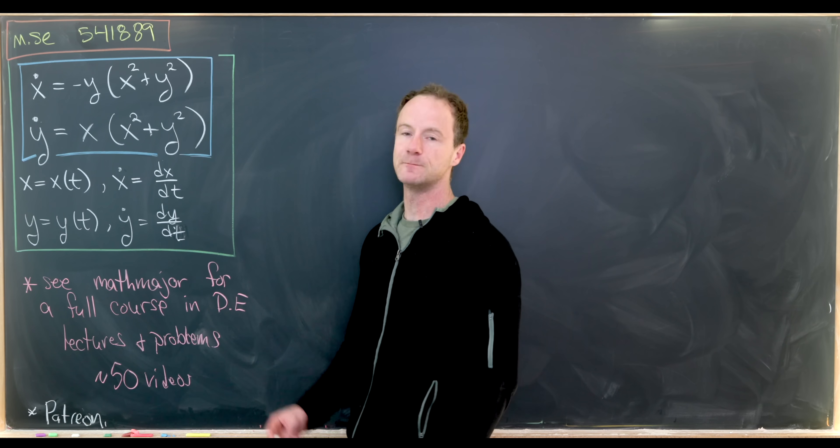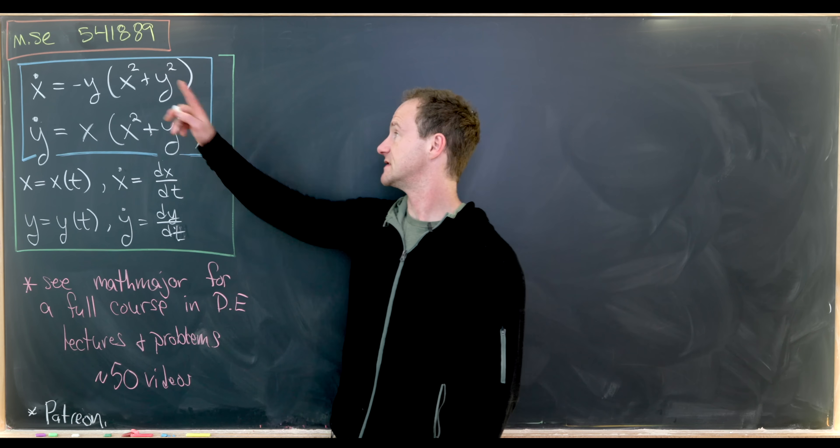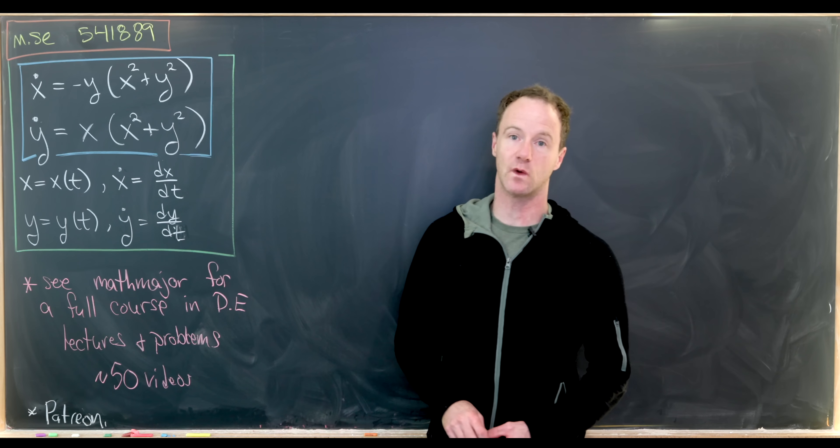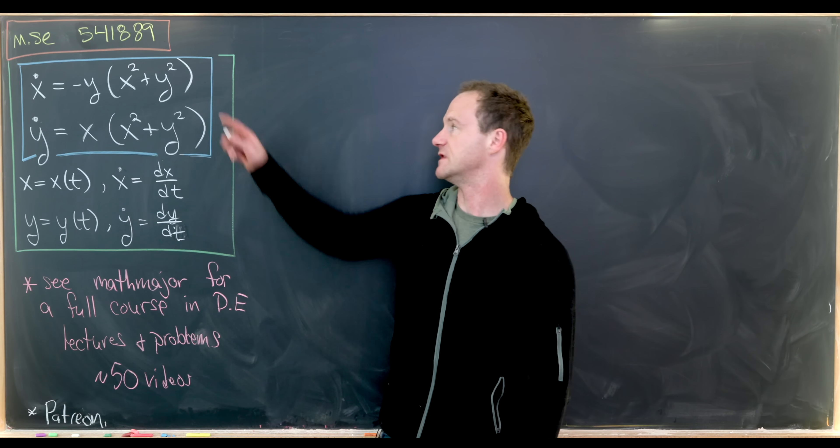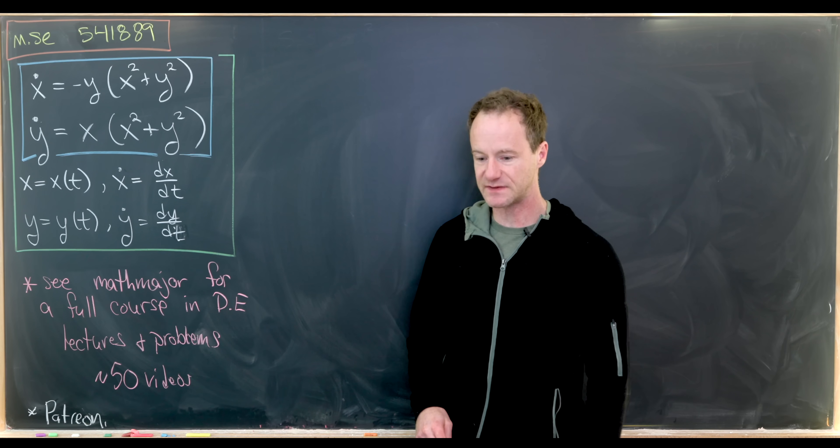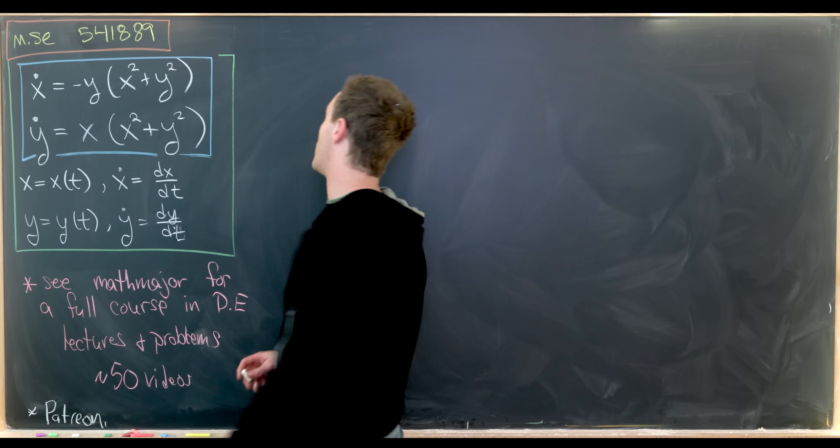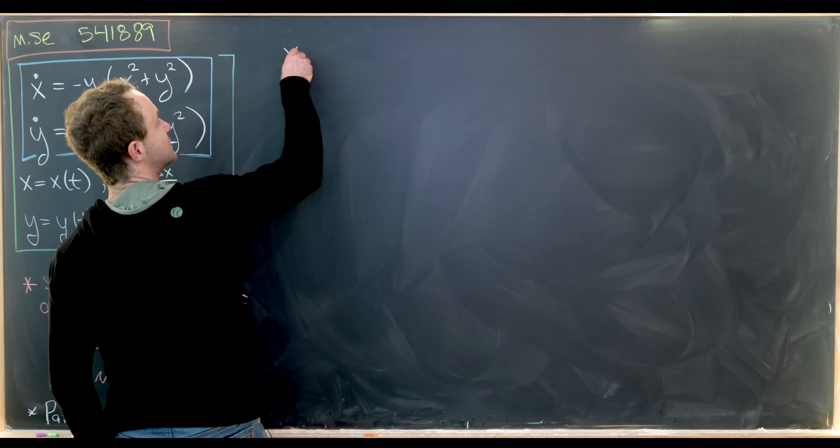Okay, so what's the trick here? I think our big motivation is that we've got x squared plus y squared in both of these terms. And that motivates me to make a change of variables into polar coordinates. So let's do that.